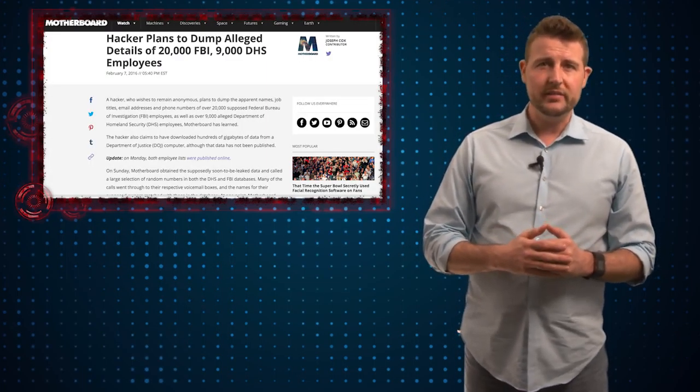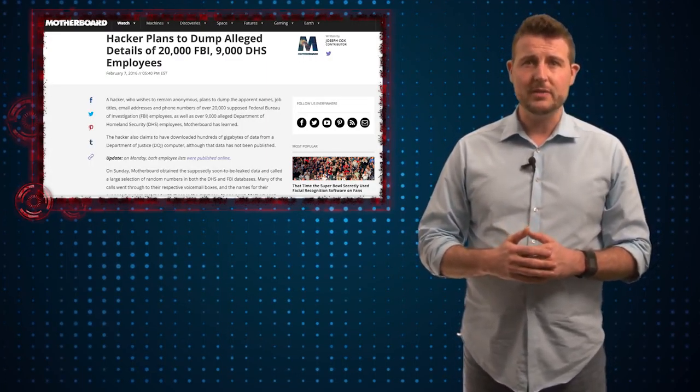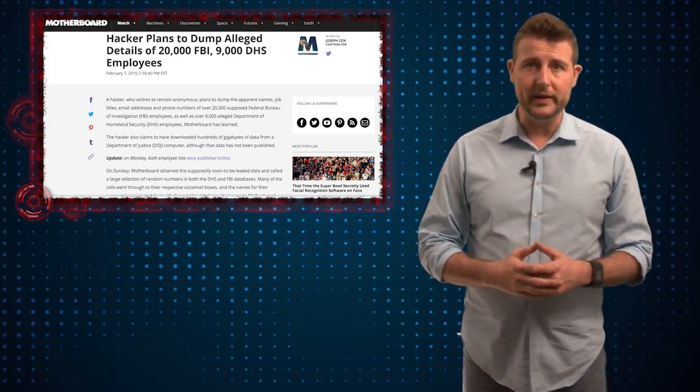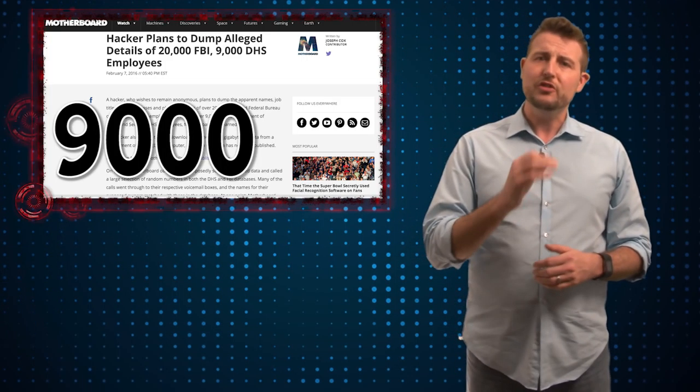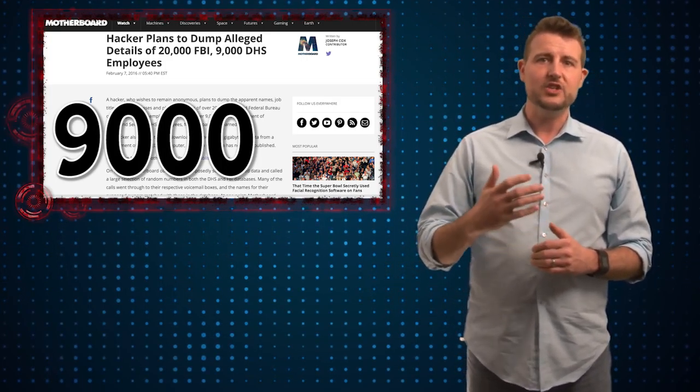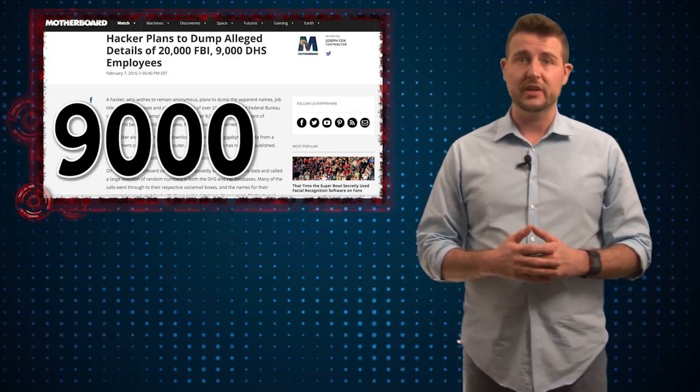Early this week an attacker released a trove of private information about US government employees. Basically he released around 2,000 records from the DHS or Department of Homeland Security employees and around 9,000 FBI employee records.